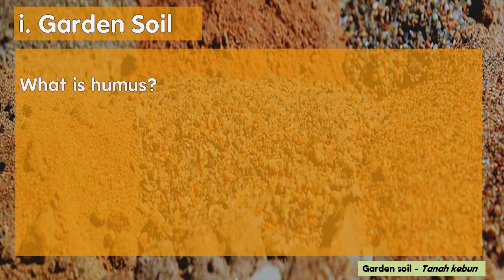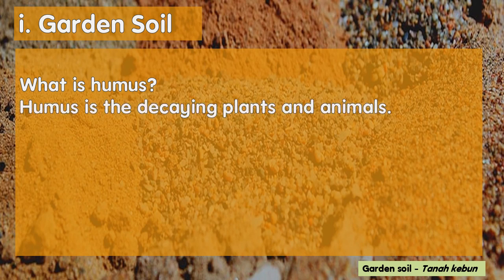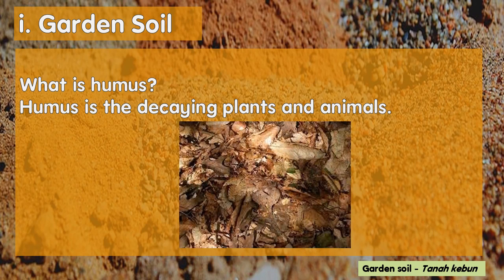What is humus? Humus is the decaying plants and animals. Humus contains many useful nutrients for healthy soil. That is why garden soil is suitable for growth of most plants, such as vegetables, fruits, and flowers.